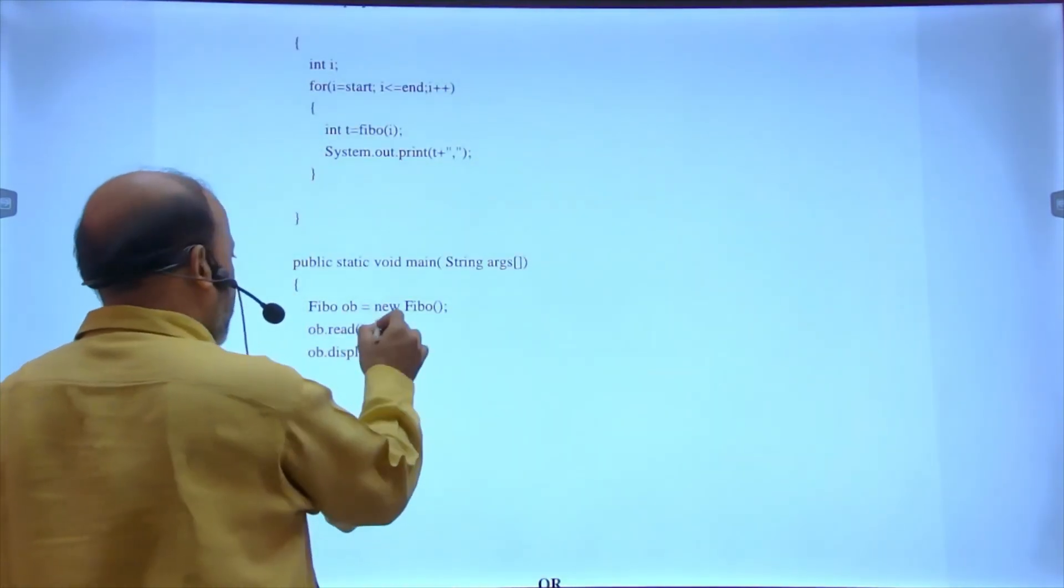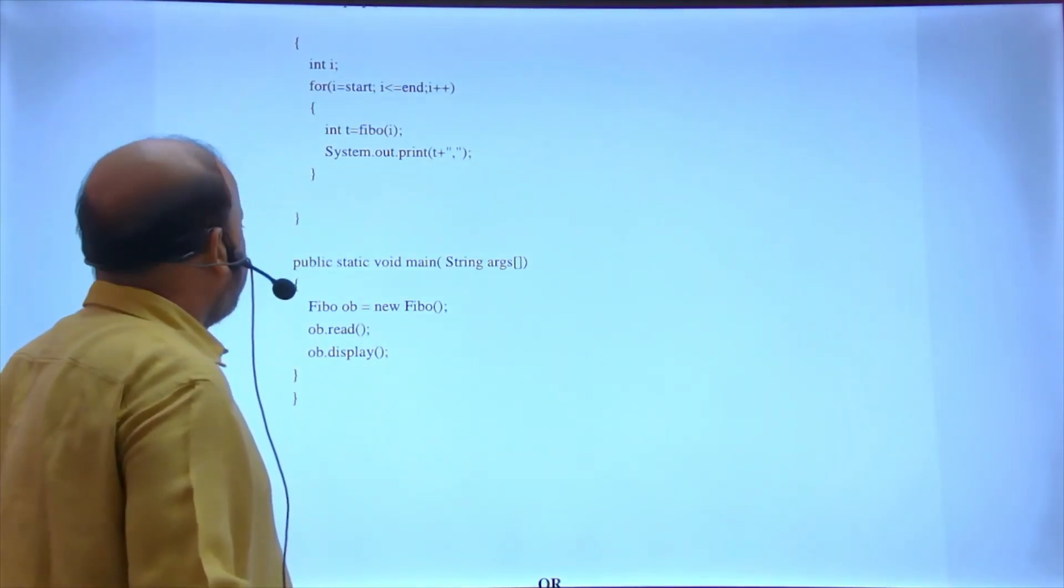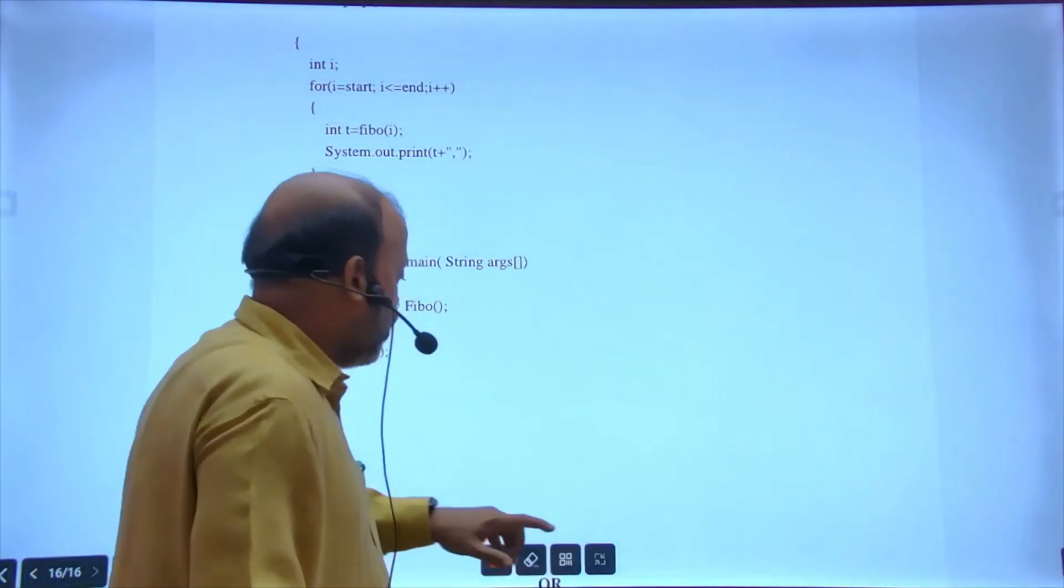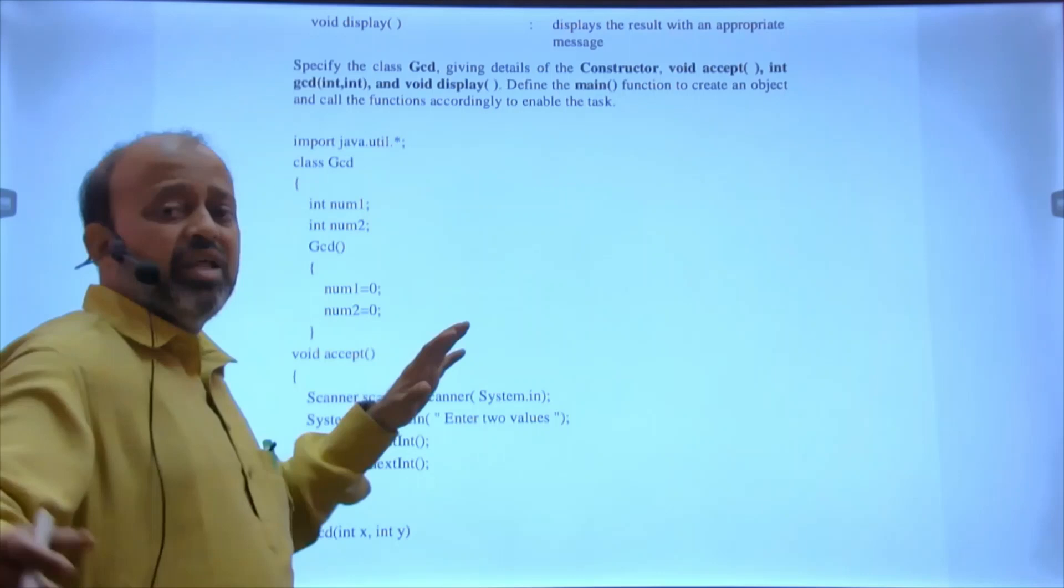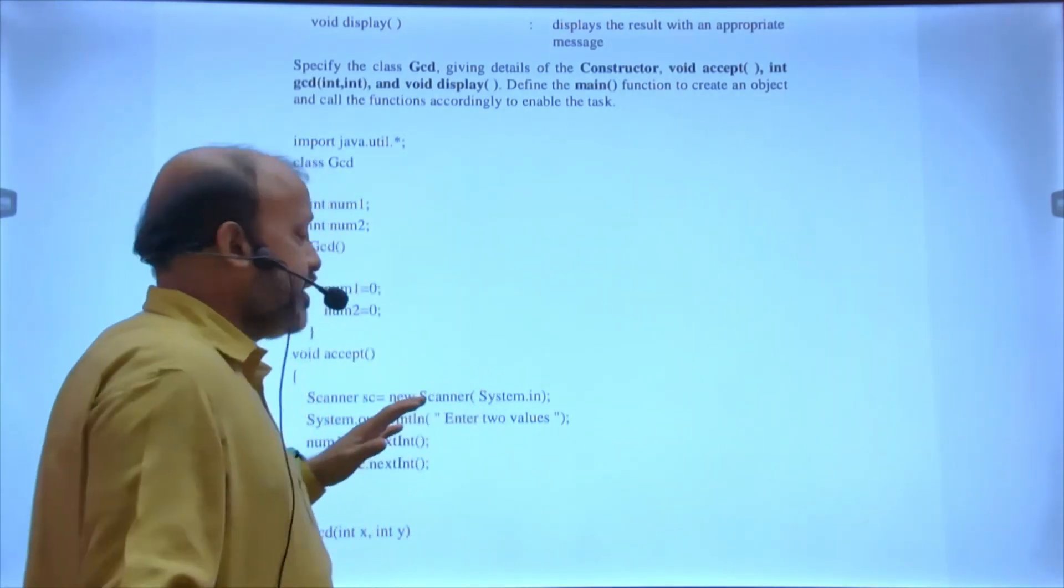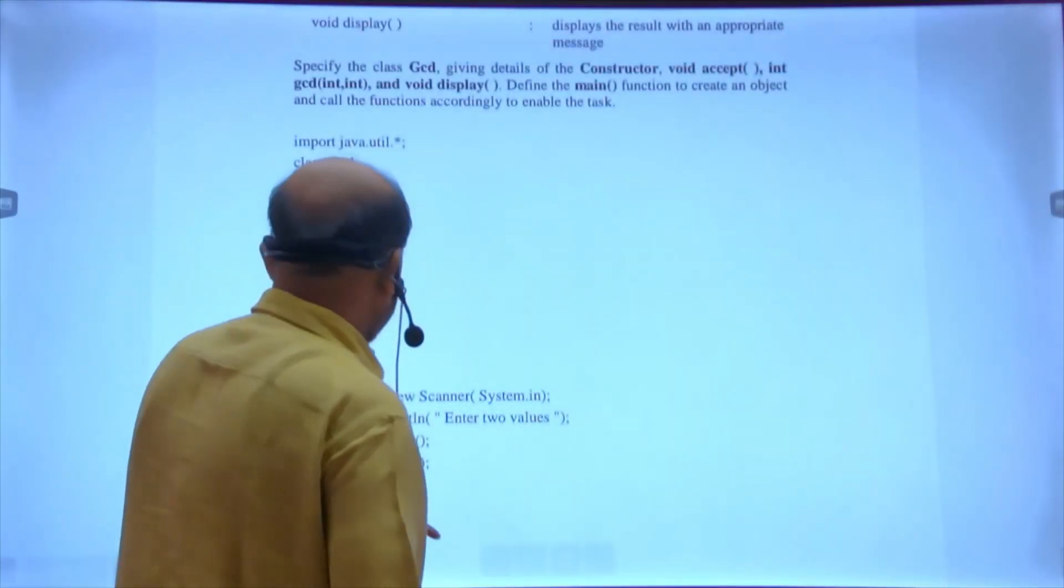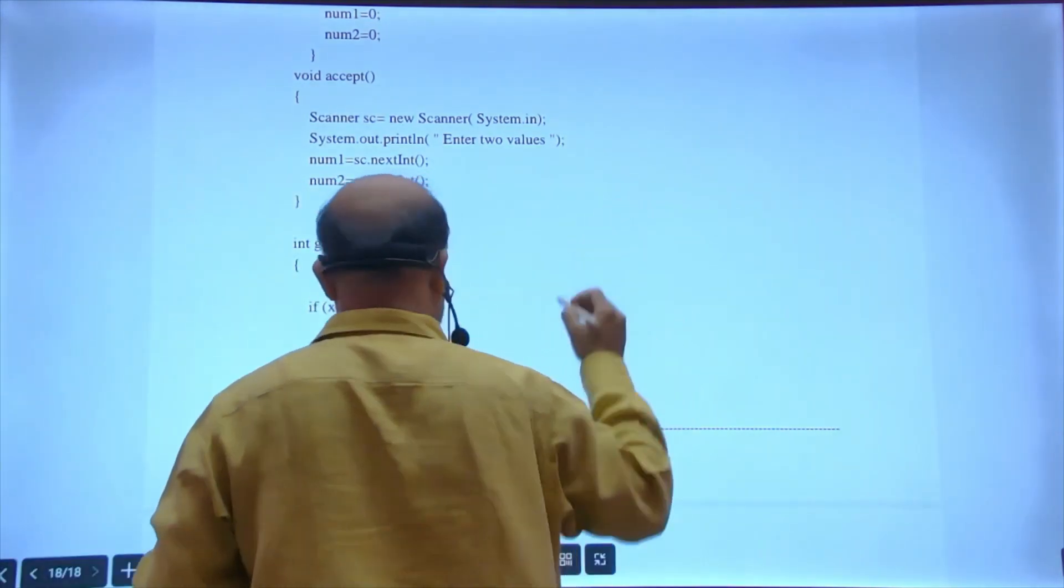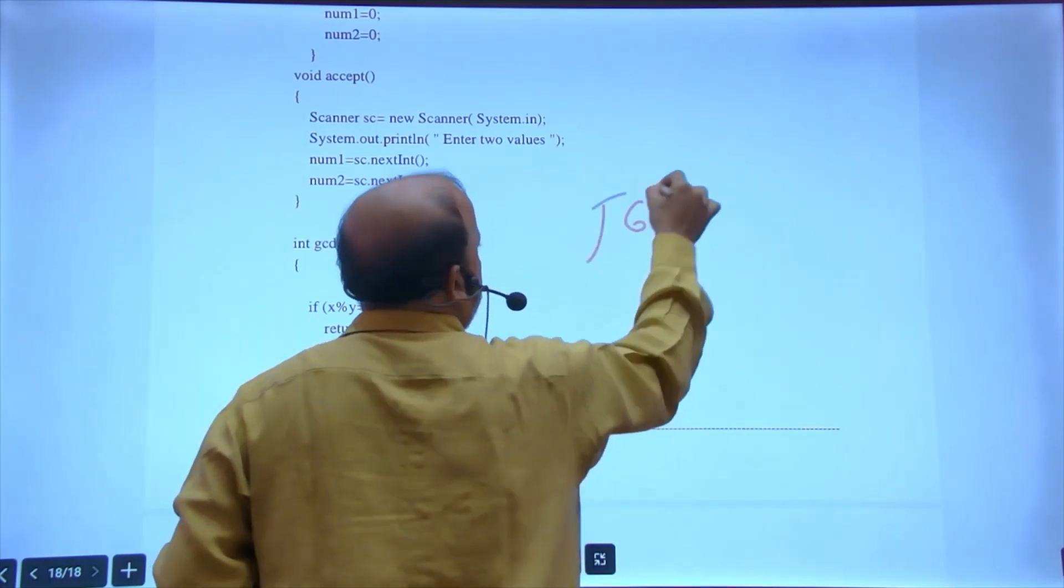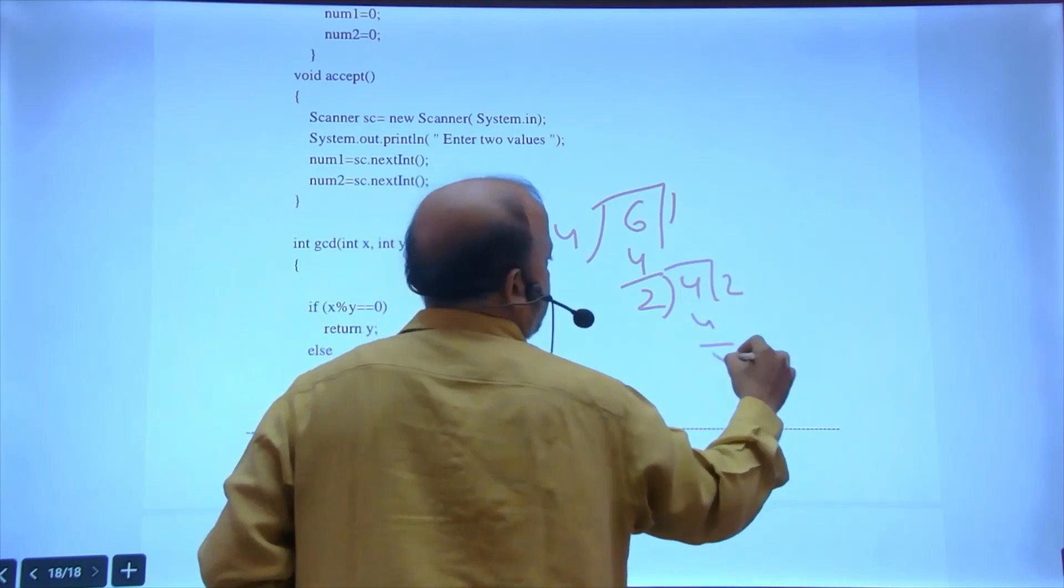In display, loop from start to end, each and every term is printed. Main: creating object, calling - I'm not giving focus on main and input because these are all very basic things. Logic: working on the logic part. Second one is GCD. This GCD again, in class 6 you'll have to study division method. The division method is being used.